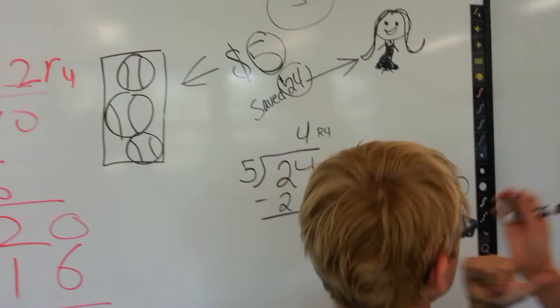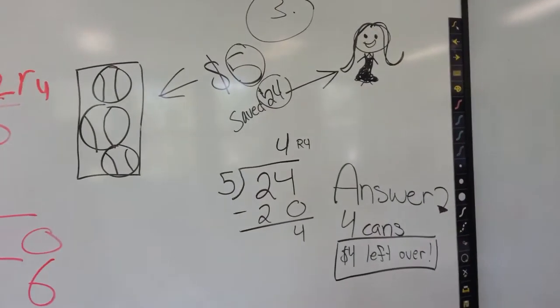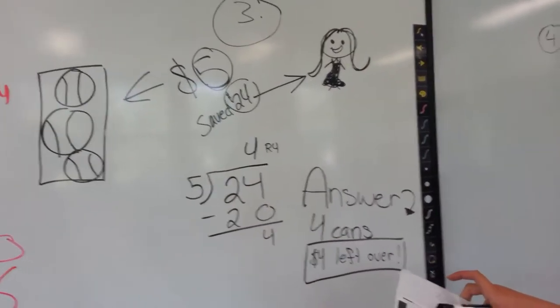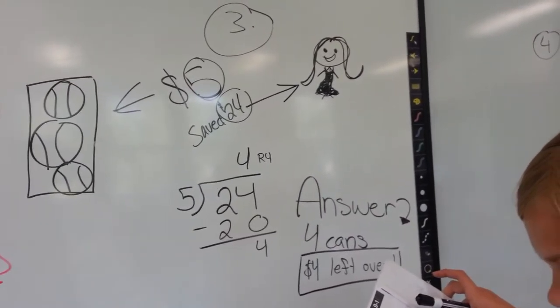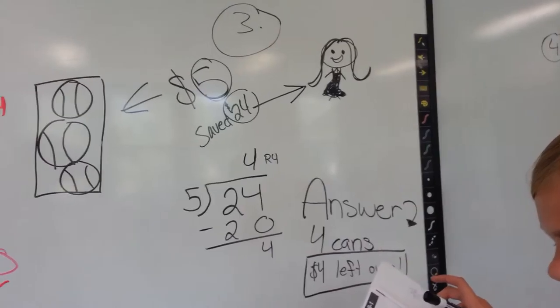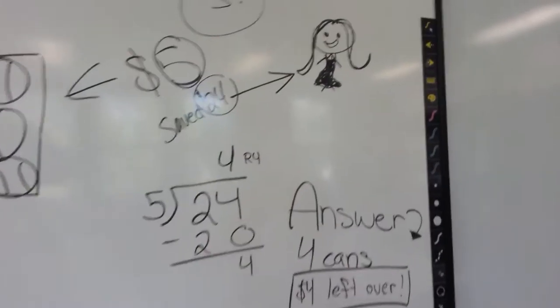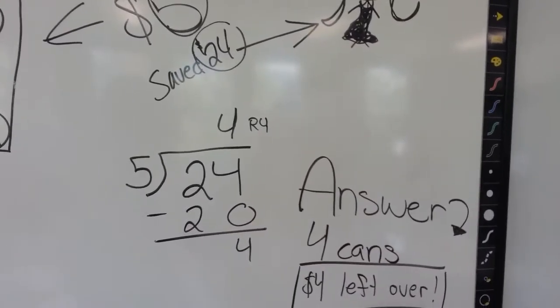Okay, who did number three? Number three says, Mary wanted to buy tennis balls. She saved twenty-four dollars. A can of balls cost five dollars on sale. How many cans could she buy? She could buy four cans.